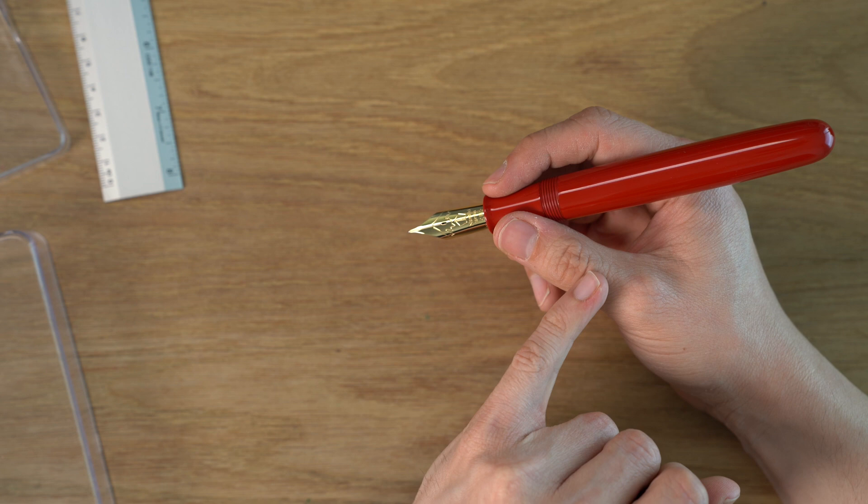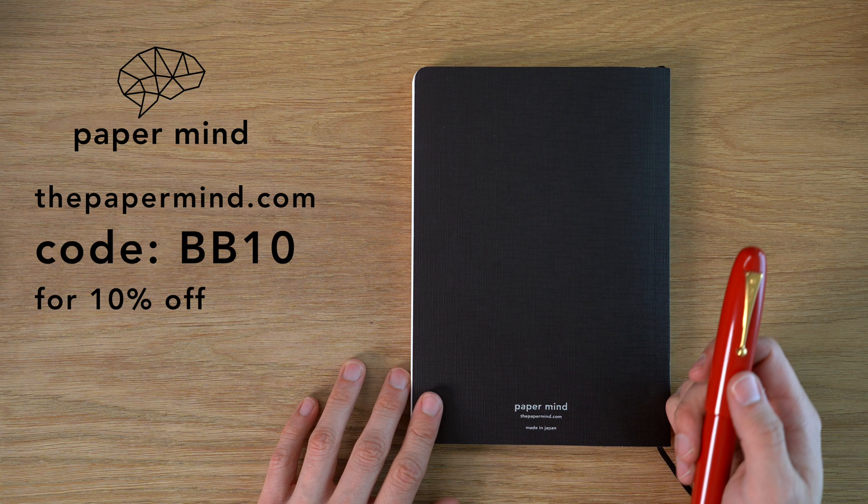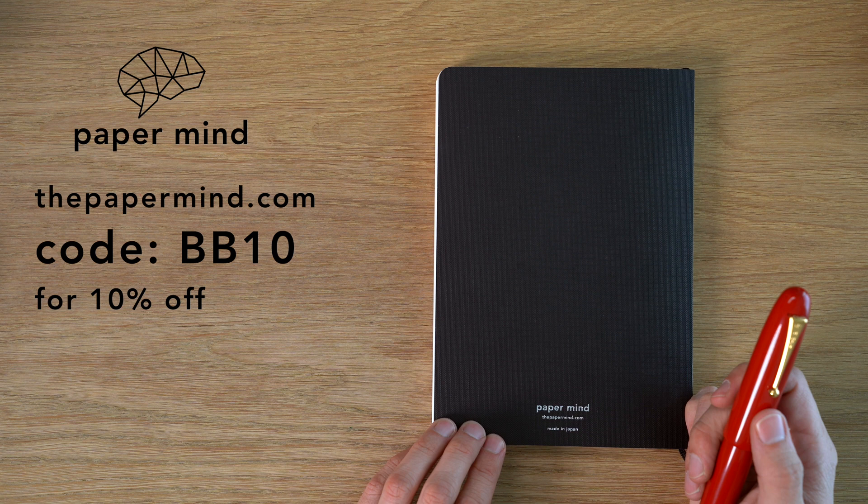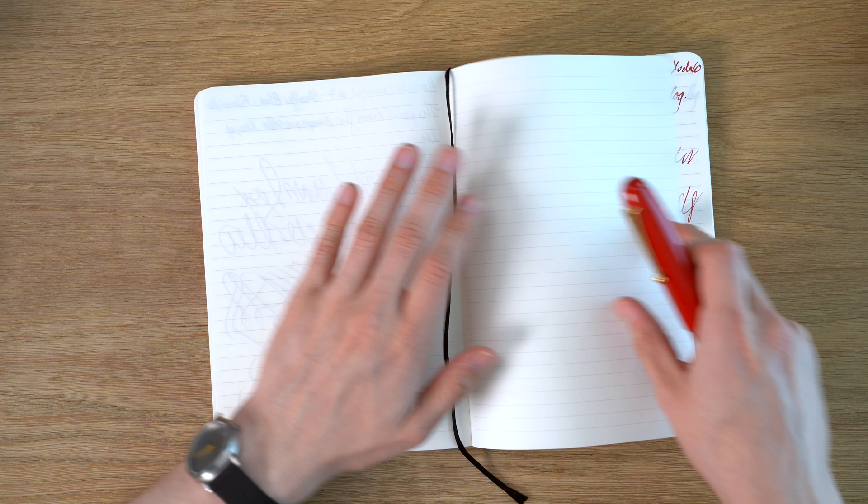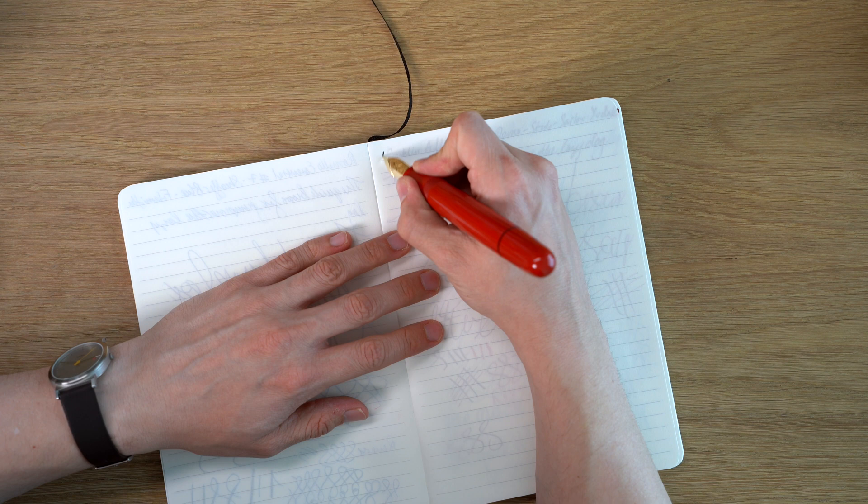For the writing sample, I'm going to be doing this on a Paper Mind Mitsubishi Bank Paper Notebook. For Blake's Broadcast viewers and subscribers, you can get 10% off with code BB10 at checkout. These are awesome with fountain pens. Let's do the writing sample. I'll put this cap off here because I don't write with this posted. Now to let some of the ink out, I'm going to unscrew the blind cap here. So this is a Namiki Emperor in broad. And this is Iroshizuku Shin-Kai ink.